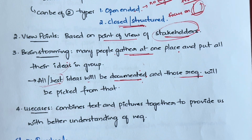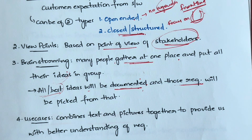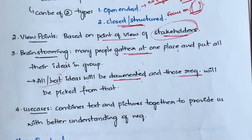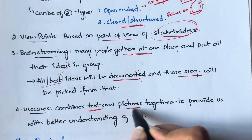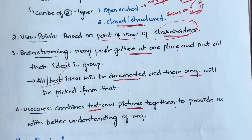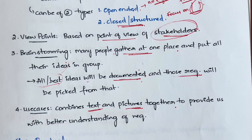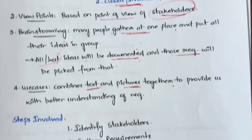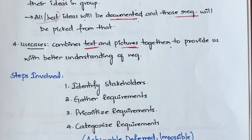Next are use cases. Note that there are many other techniques beyond these four, but these are the most common. In use cases, you combine text and pictures together, which provides a better understanding of the requirements. It's always easier to understand things in picture form. These will be use case diagrams - with actors and other characters - and based on that diagram you try to understand the system.